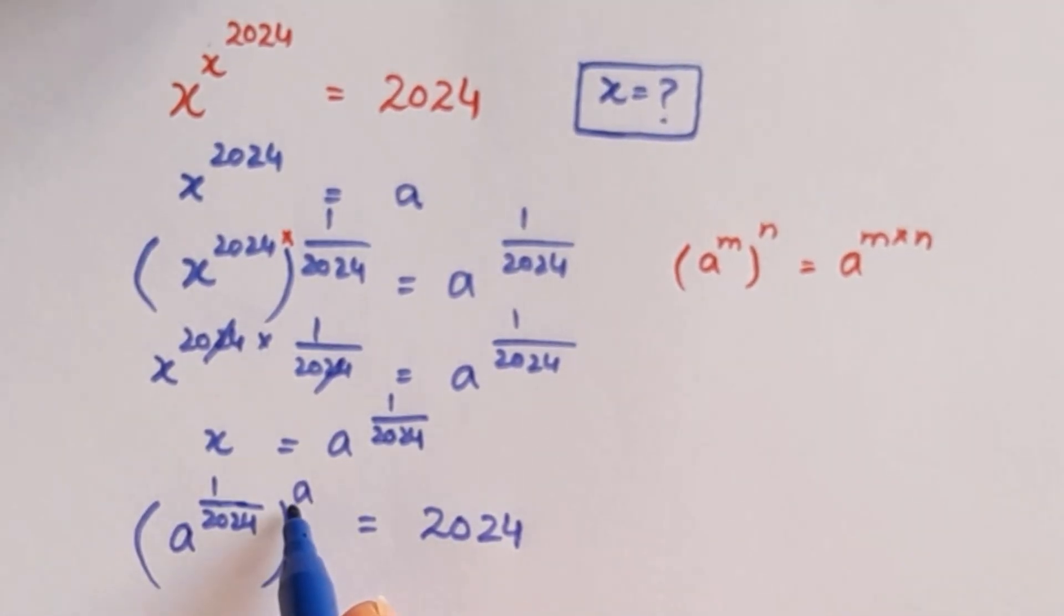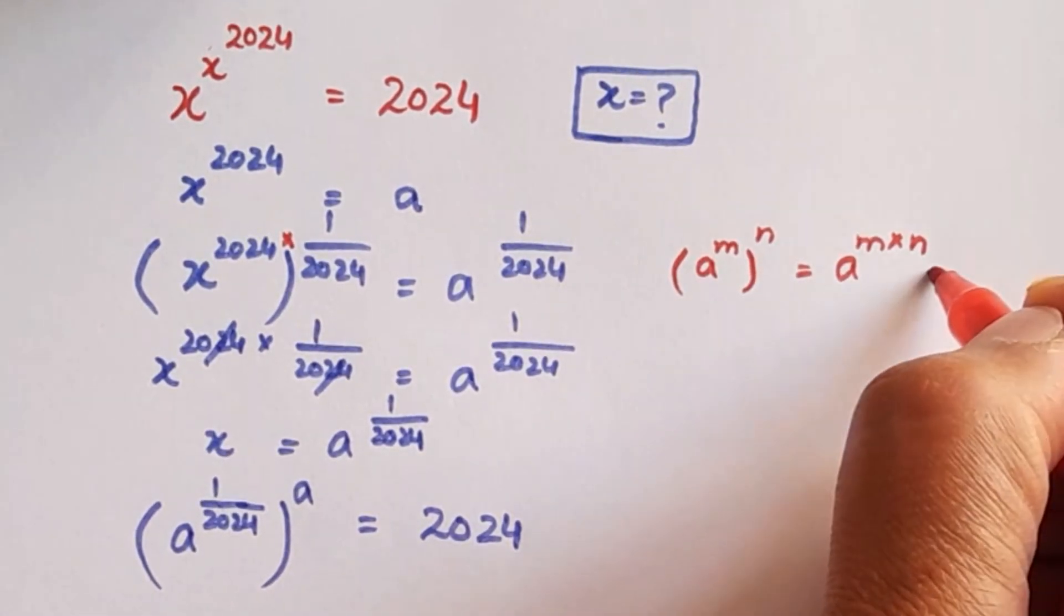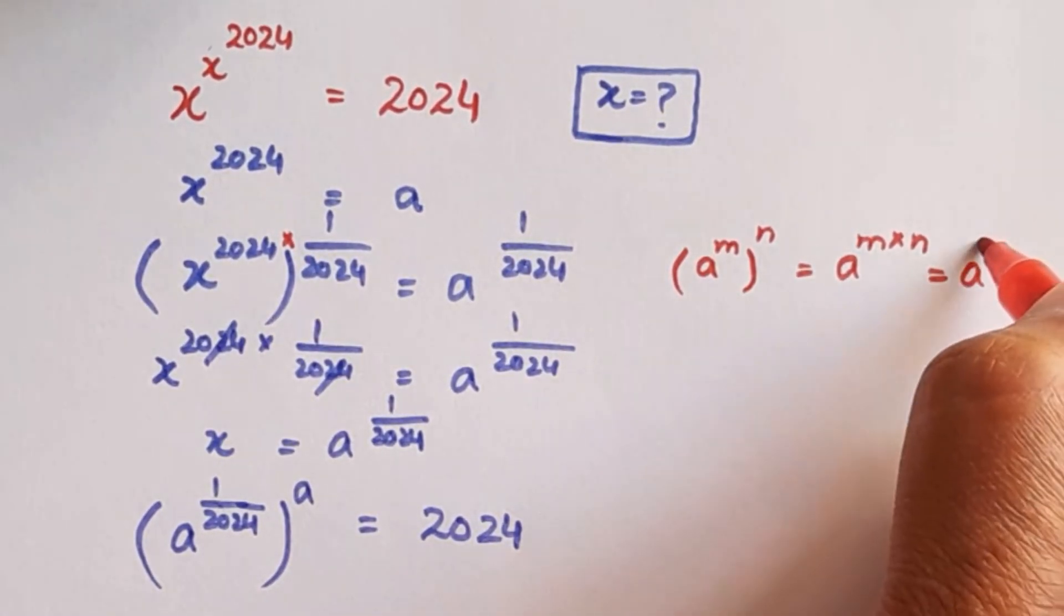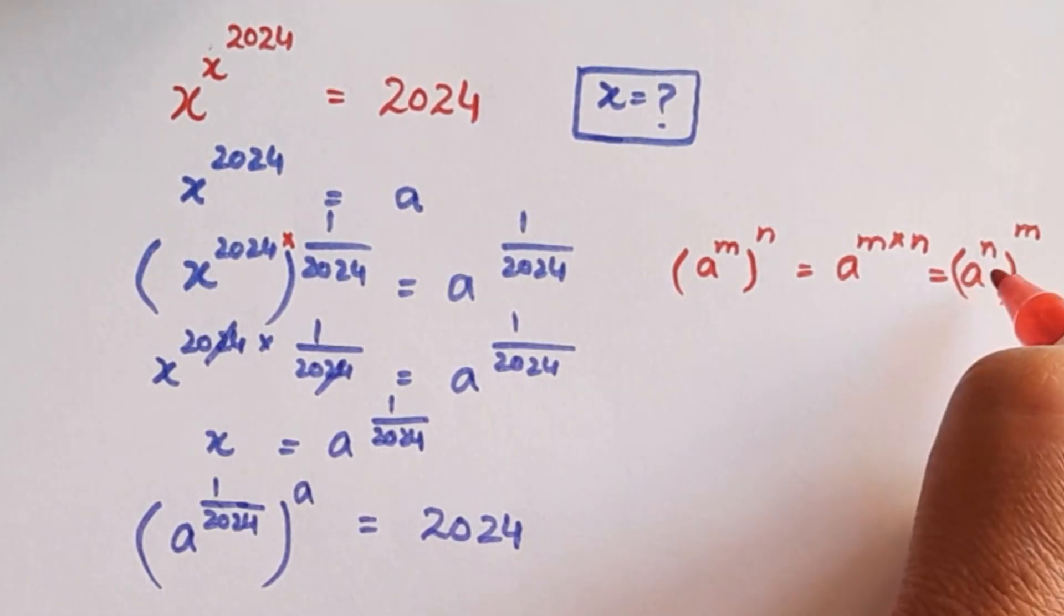In the next step, we are going to swap over the powers. Like we know this rule: a to the power m to the power n is also equal to a raised to power n raised to power m. This means we can swap over the powers.